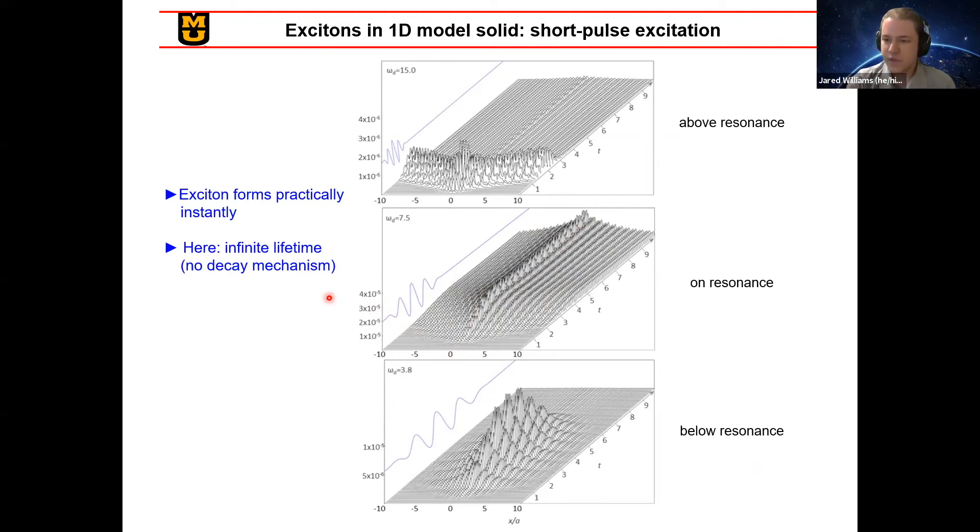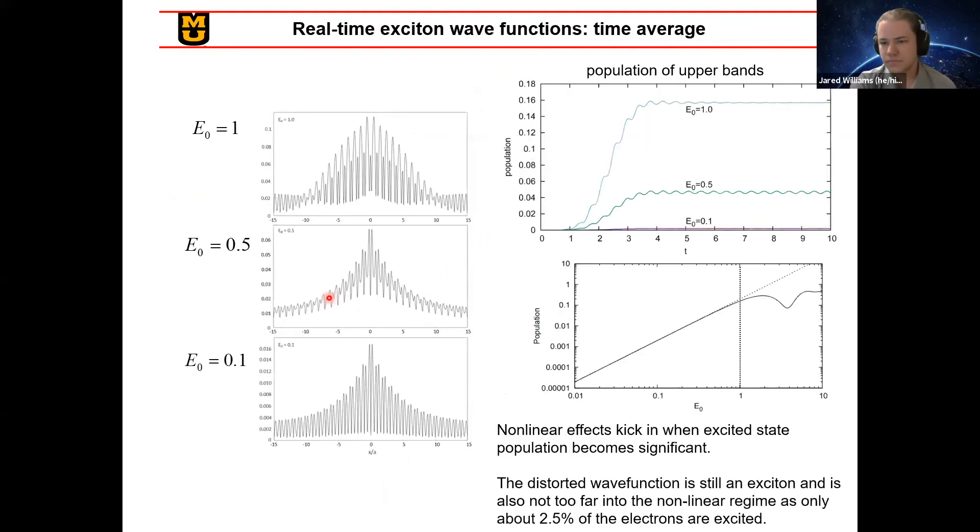But instead of messing with the frequency of this pulse, another way to look at it is by messing with the strength of the pulse. And you'll see that by these graphs over here on the left, as we increase the strength of the electric field corresponding to this pulse, the wave function gets a little bit distorted as we go up a little bit. But the same general shape is happening. And this change from what we are seeing initially is the onset of nonlinear effects from higher bands coming into play. But by the time the field strength gets up even just to one, the shape has changed dramatically. And you can see how this is happening with the population of the upper bands here, where you can see it's growing exponentially in population.